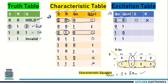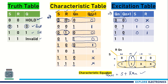For Qn=0 → Qn+1=1: this only occurs with SR=10 in the characteristic table, so S=1 and R=0. For Qn=1 → Qn+1=0: this only occurs with SR=01, so S=0 and R=1.